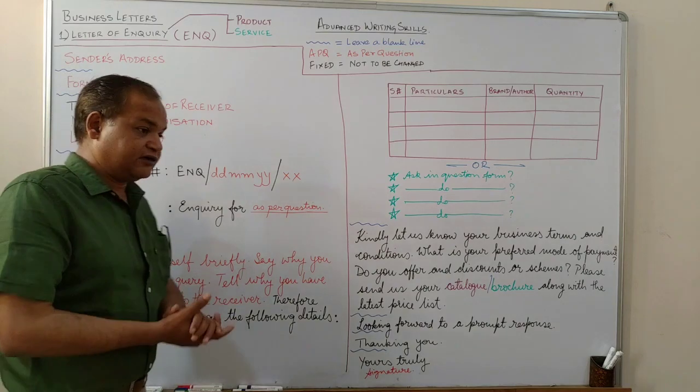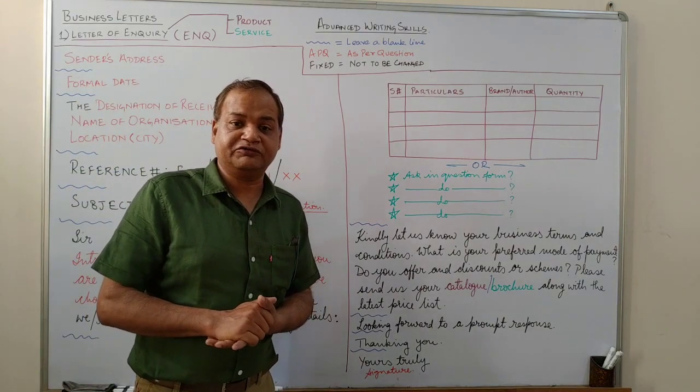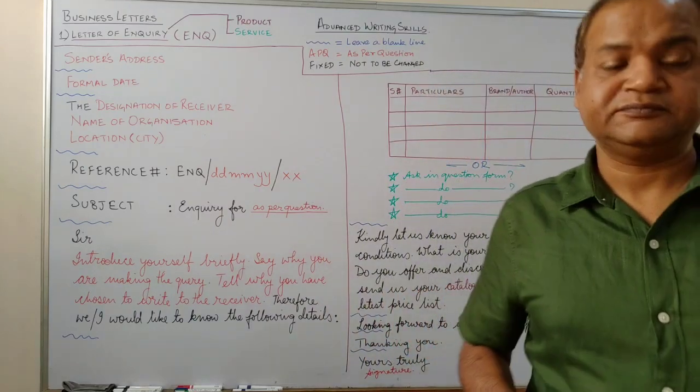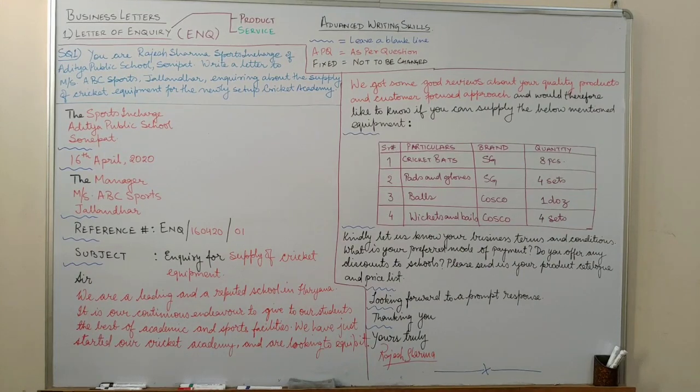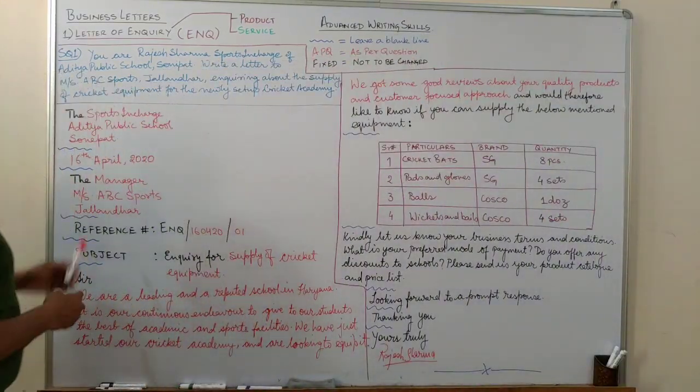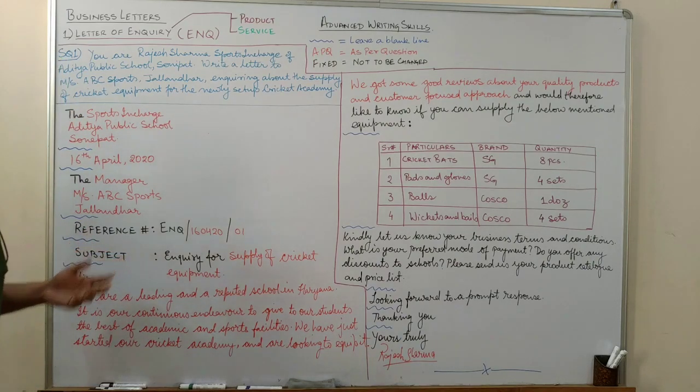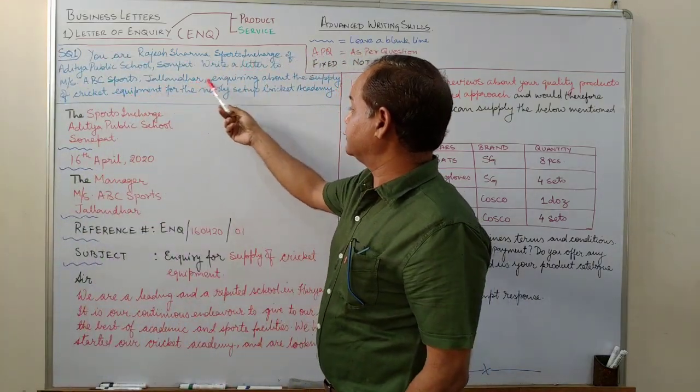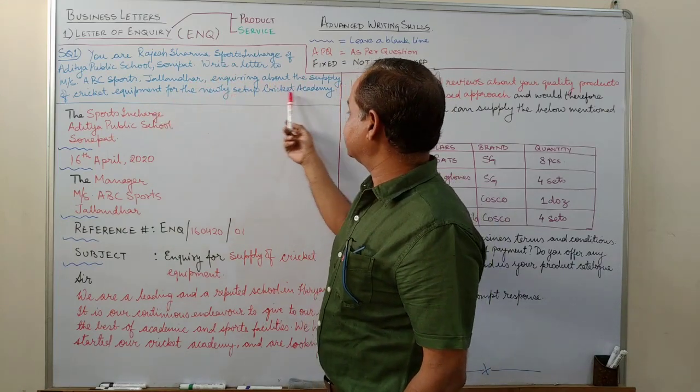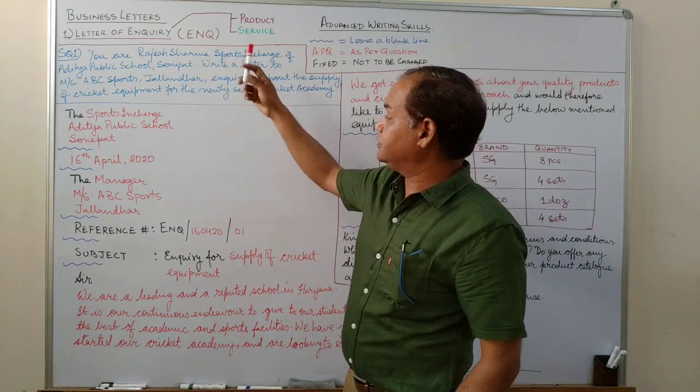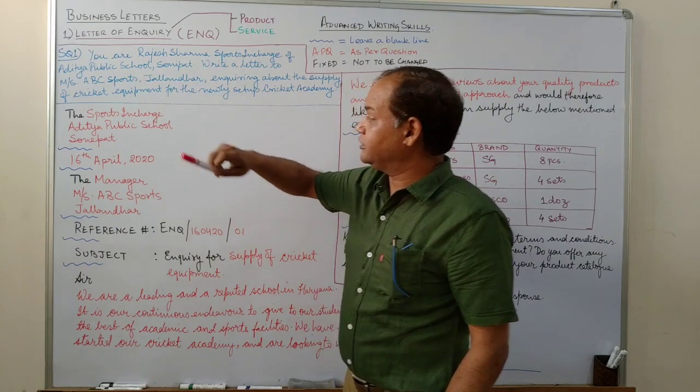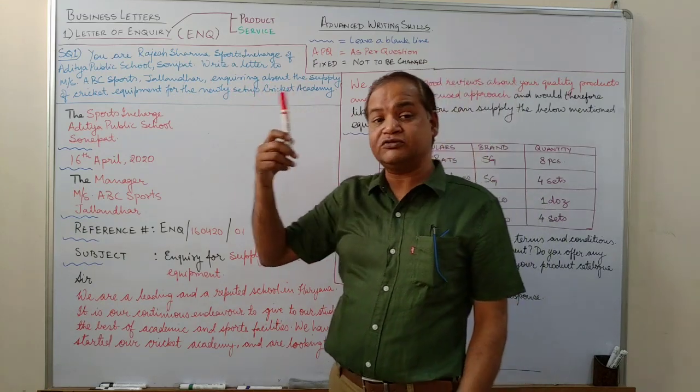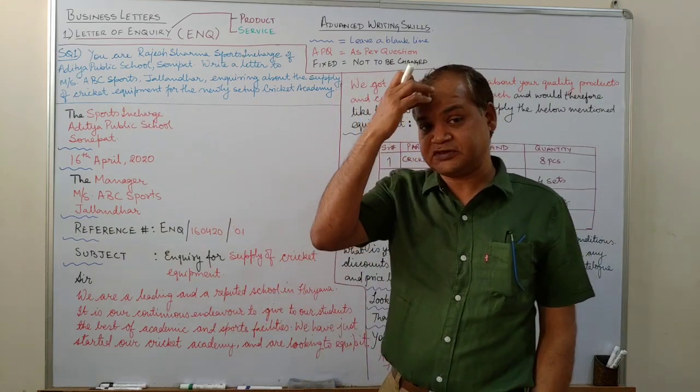And I will write on board an example of a business letter of inquiry about a product and you will see how it is to be done and how it is to be written. All right. So let's look at the sample question one. Now, it says, you are Rajesh Sharma, sports in charge of Aditya Public School, Somipata. It says, write a letter to Messrs ABC Sports Jalandhar, inquiring about supply of cricket equipment for the newly set up cricket academy. Now, there are a couple of hints. You've been given the designation of the sender. You've been given the name of the organization to whom it has to be sent. You've been given the city and you've been given a hint about a cricket academy. So you have to ask about sports equipment, about cricket equipment.